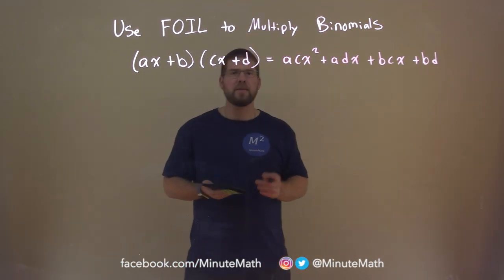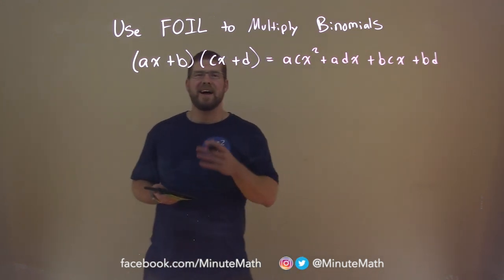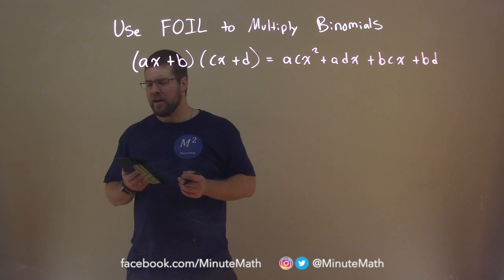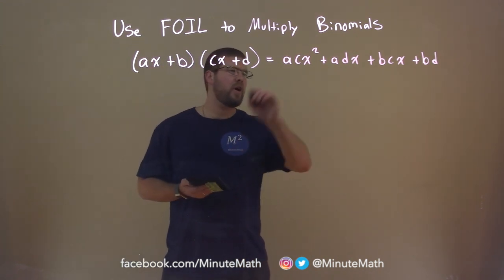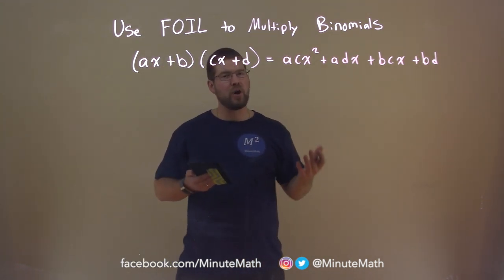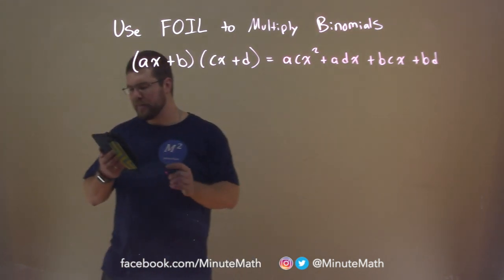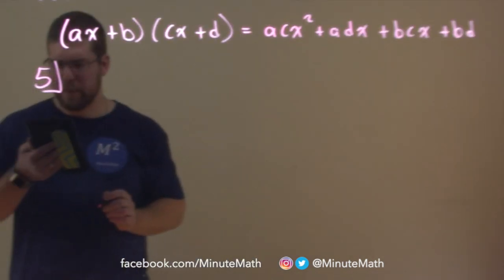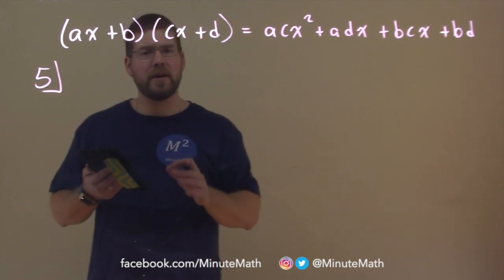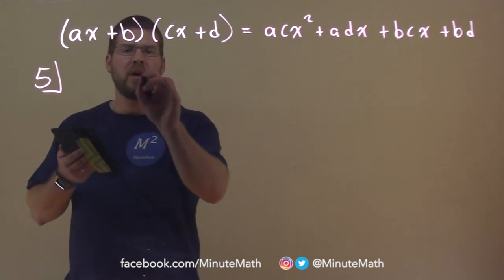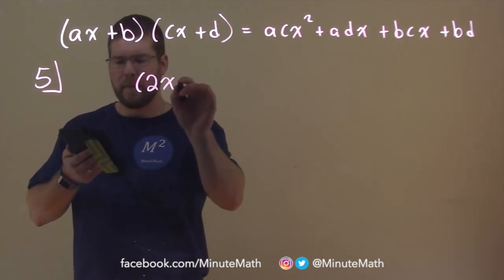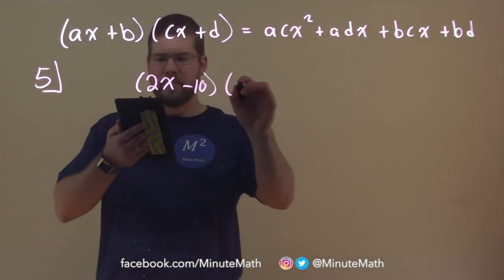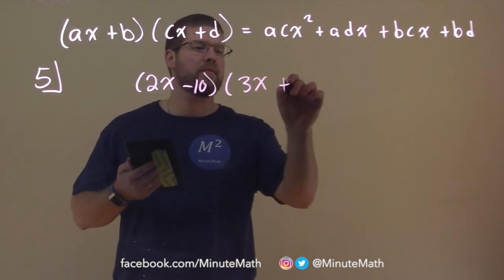I find this is almost easier to just hop in and simplify the problem using FOIL — I use arches all the time to show the FOIL method. So let's go with Example 5 here. We're going to use FOIL to find the product. We're given 2X minus 10 times 3X plus 3.